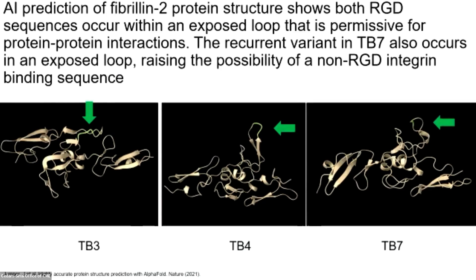Though the RGD motif is the canonical integrin binding motif, there are also non-canonical binding sites that can be more difficult to identify. One prediction is that non-canonical binding sites would share features with canonical sites, such as presentation on flexible loops for easy integrin accessibility. The TB4 domain has been shown previously to be used for integrin binding, and AI structural prediction asserts that the RGD domain exists at the end of a flexible loop. The other two mutations in TB domains are also located in flexible loops, further supporting the hypothesis that these mutations may be disrupting binding sites.